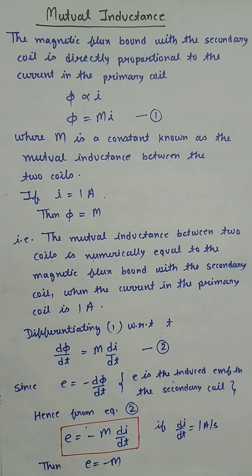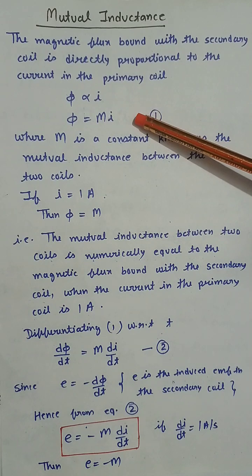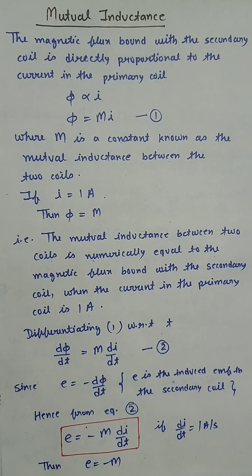Mutual inductance. The magnetic flux bound with the secondary coil is directly proportional to the current in the primary coil. That is, phi is proportional to I, so phi equals Mi, where M is a constant known as mutual inductance between the two coils.